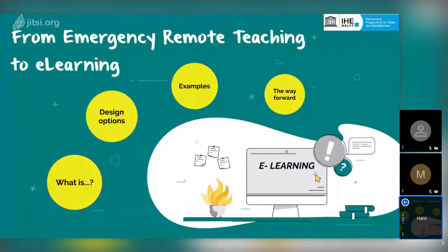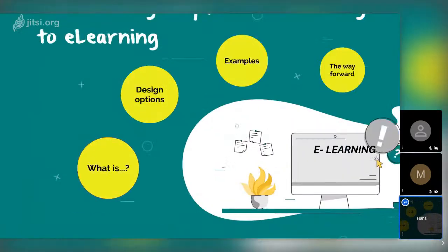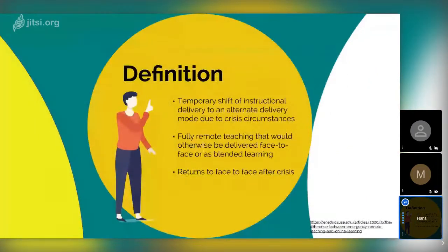The title is 'From Emergency Remote Teaching to E-Learning,' but first we need to define what we're talking about. Basically, what we've been doing since the start of the COVID crisis is moving quickly to an online mode. In that online mode we try to stay as close as possible to the face-to-face modality — we present lectures and do other things in class. Emergency remote teaching became a replacement of face-to-face, but with the same means and learning methods, sometimes blended. The idea was to return to the old normal after the crisis. There's been a very nice article written about this.